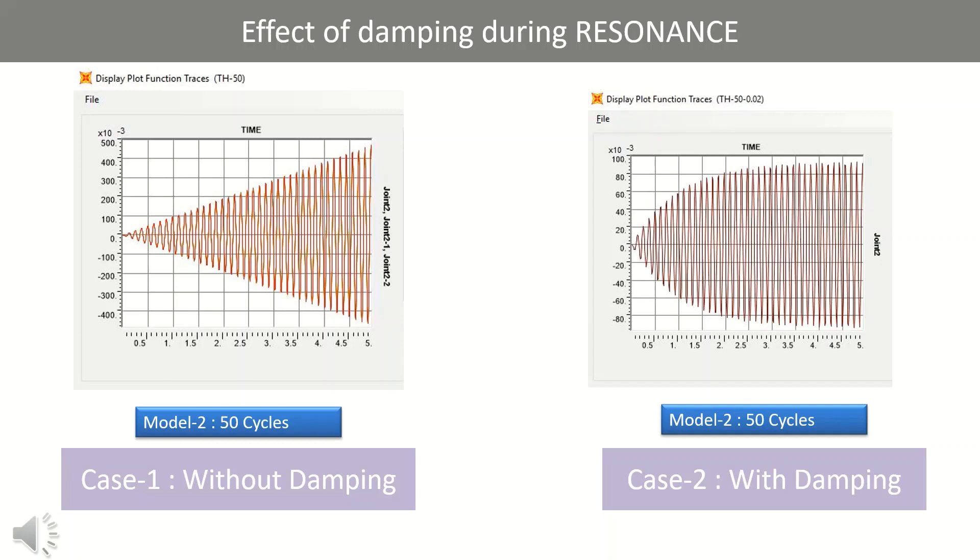In case two, the similar dynamic load is applied and 2% of damping is considered. We can observe that after five seconds, the value of amplitude is significantly lesser as compared to the structure having damping zero.